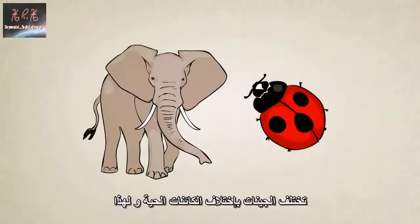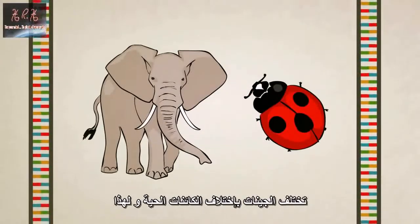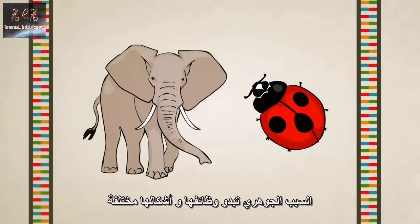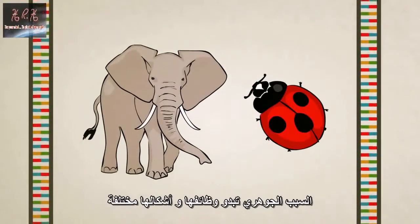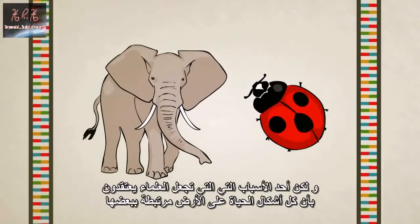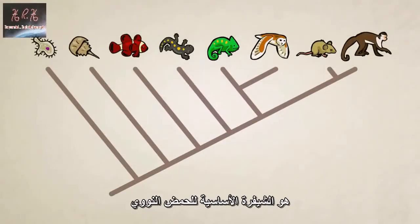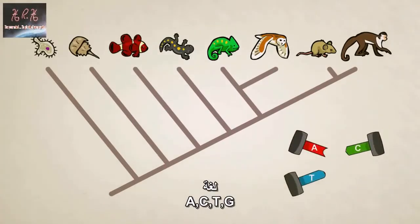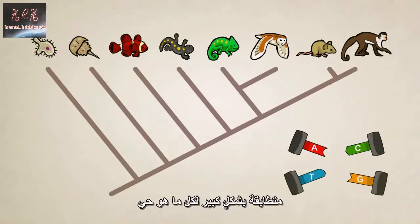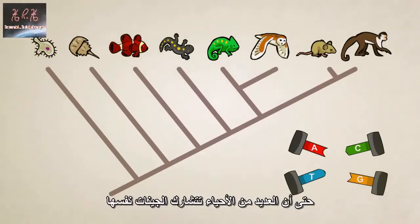Different creatures have different genes, which is ultimately why their bodies look and function differently. But one of the many reasons scientists believe all life on Earth is related is that the basic DNA code — the language of A's, C's, T's, and G's — is pretty much the same for all living things. Many creatures even share some of the same genes.